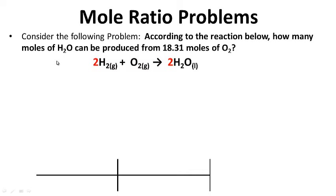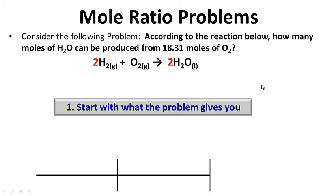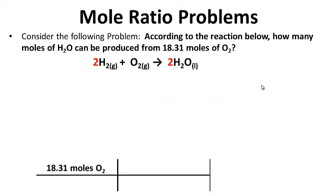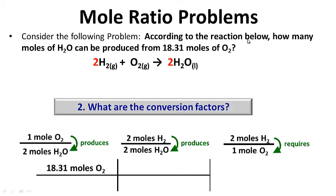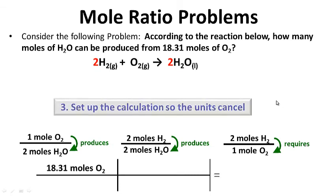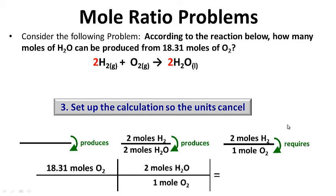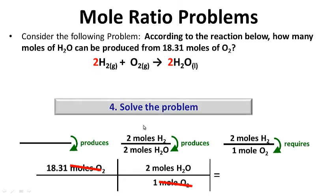Mole ratio problems — consider the following: according to the reaction, how many moles of H2O can be produced from 18.31 moles of O2? Step 1: start with what the problem gives you — 18.31 moles of O2. Step 2: identify the conversion factors — the question involves moles of O2 and moles of H2O. Set up the calculation so units cancel: 1 mole of O2 requires 2 moles of H2O, so moles of O2 cancel. Solving: 18.31 × 2 ÷ 1 = 36.62 moles of H2O.